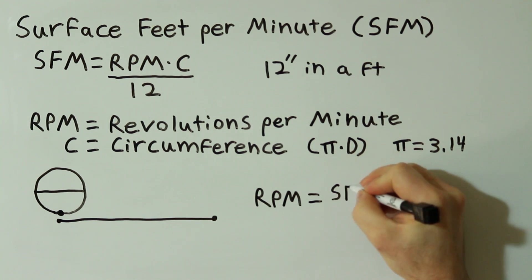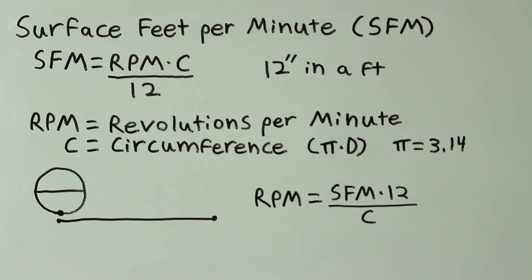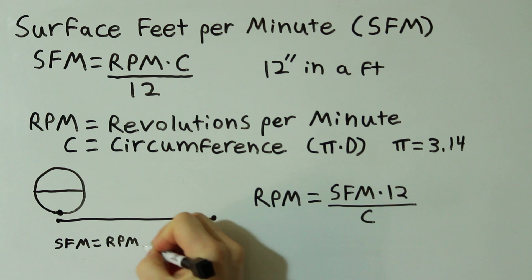The formula for RPM is surface feet per minute times 12 divided by circumference. This formula can be derived from the surface feet per minute formula.